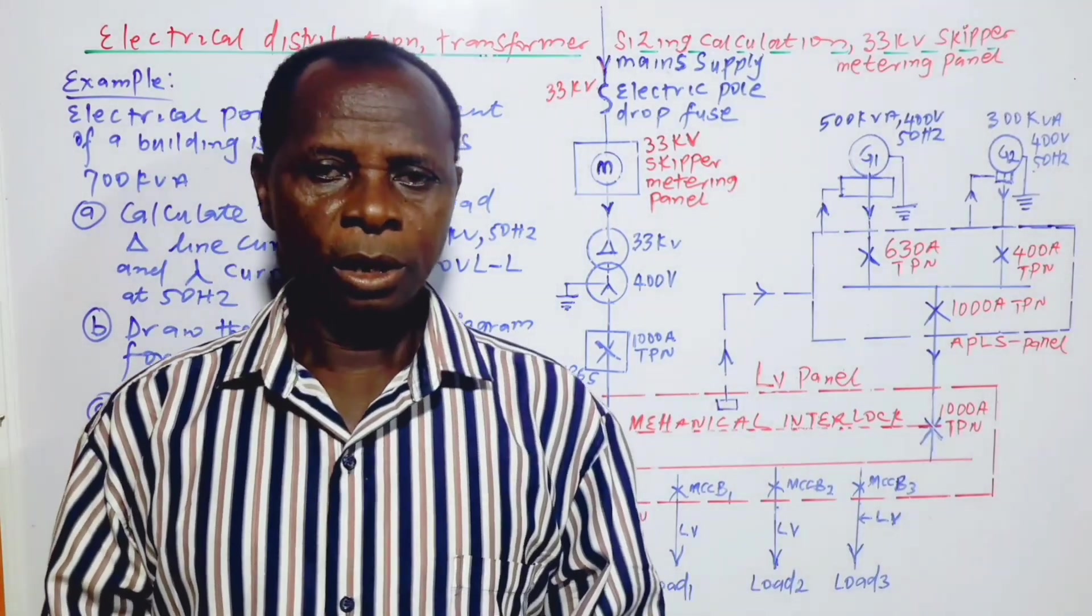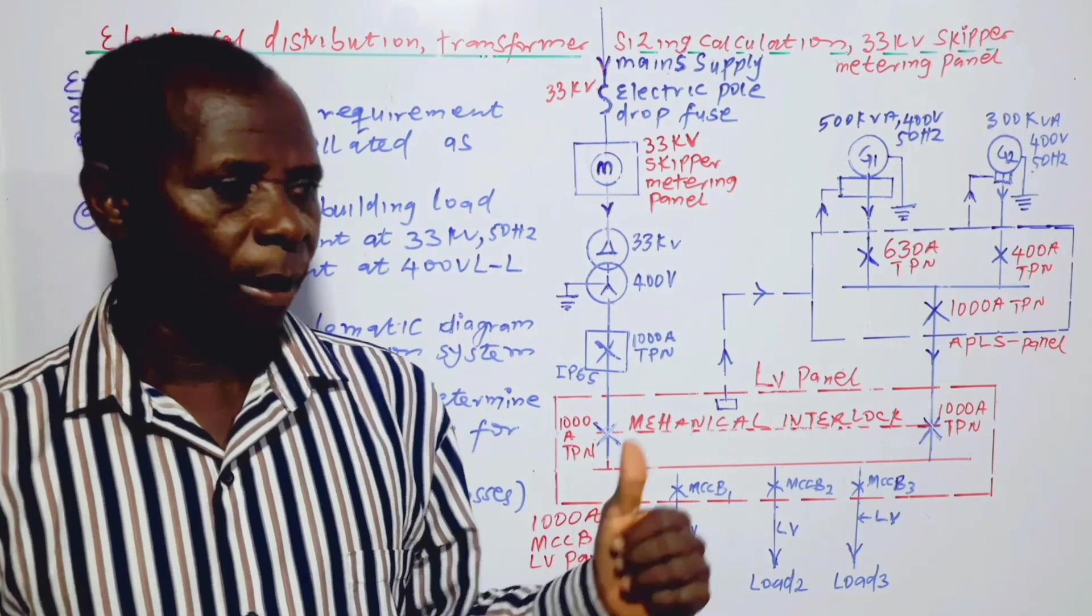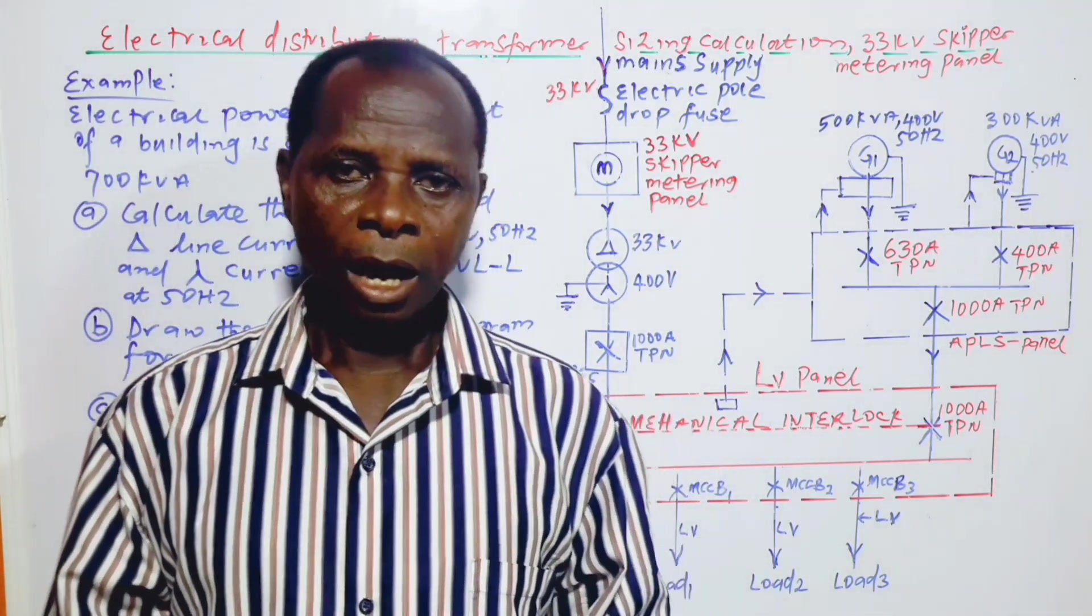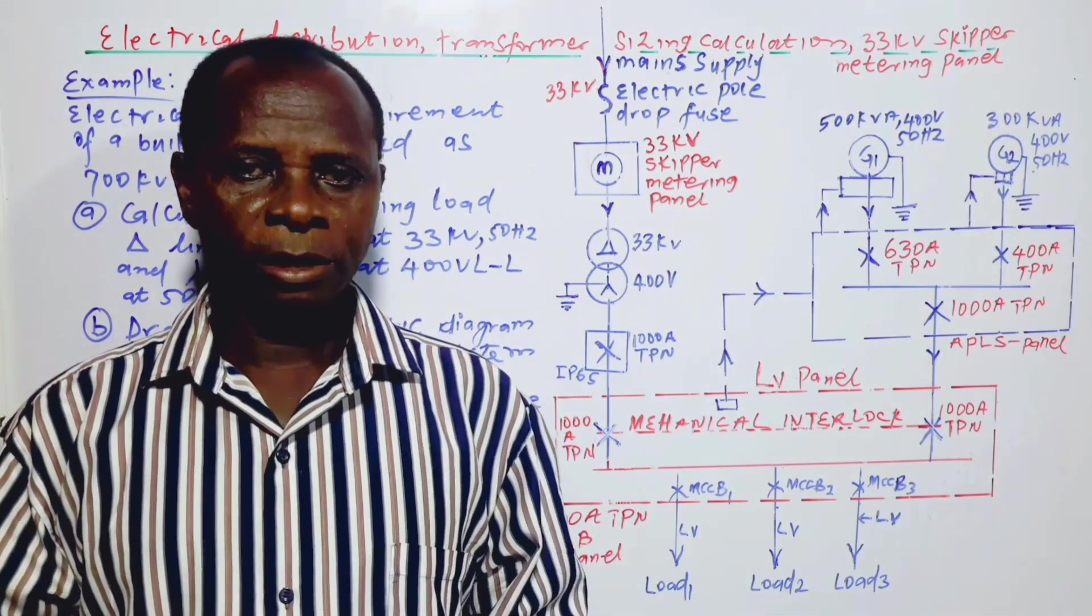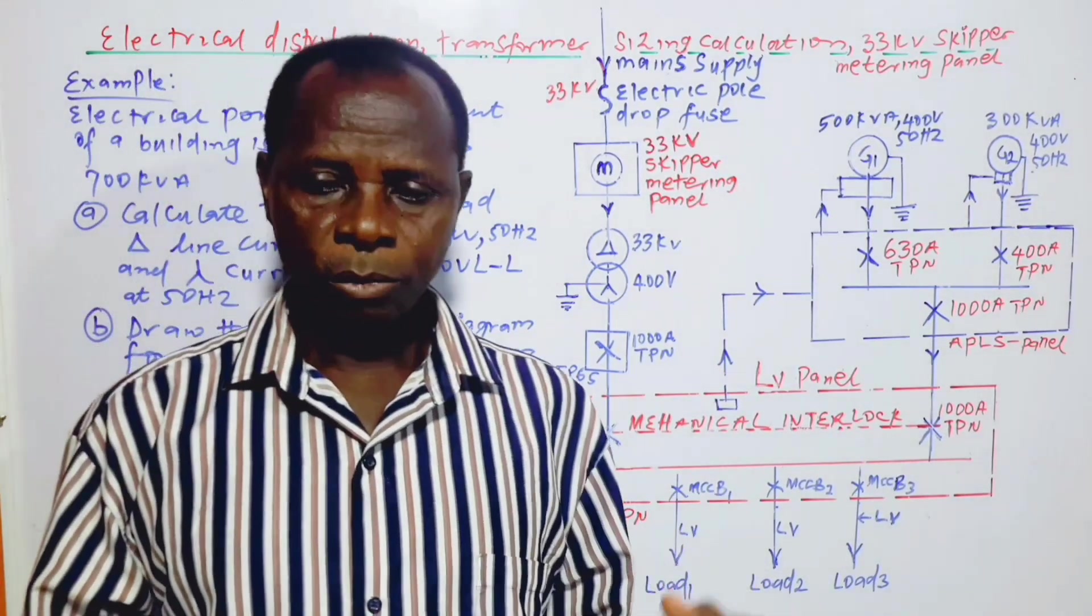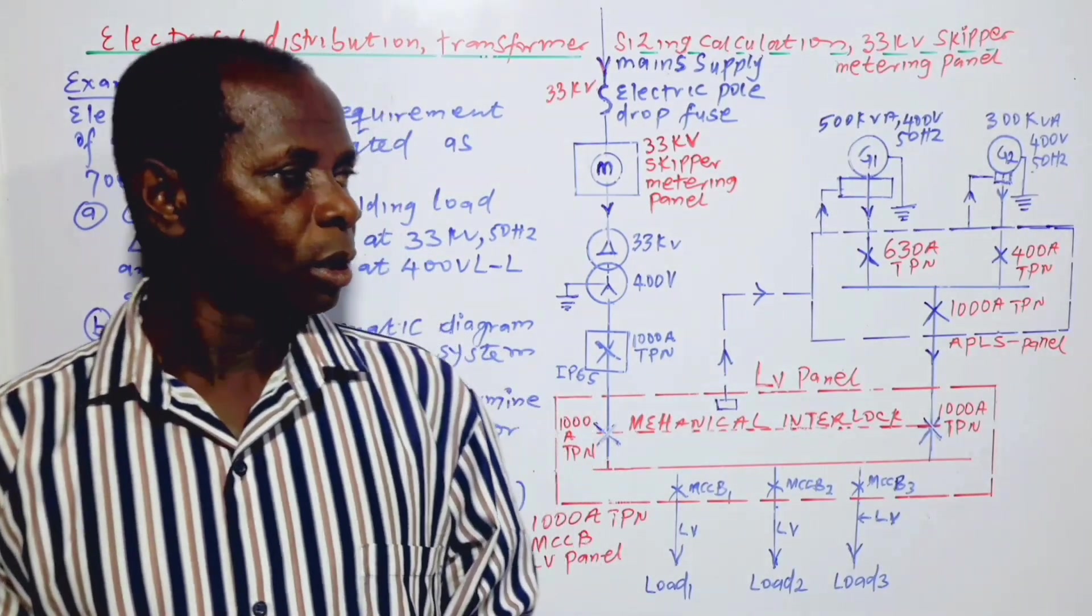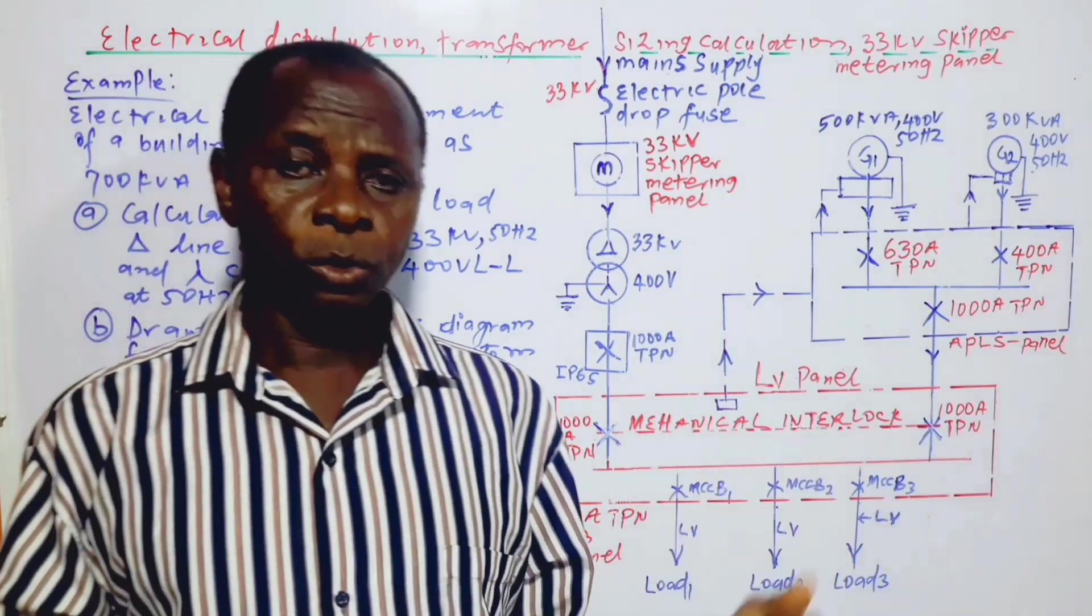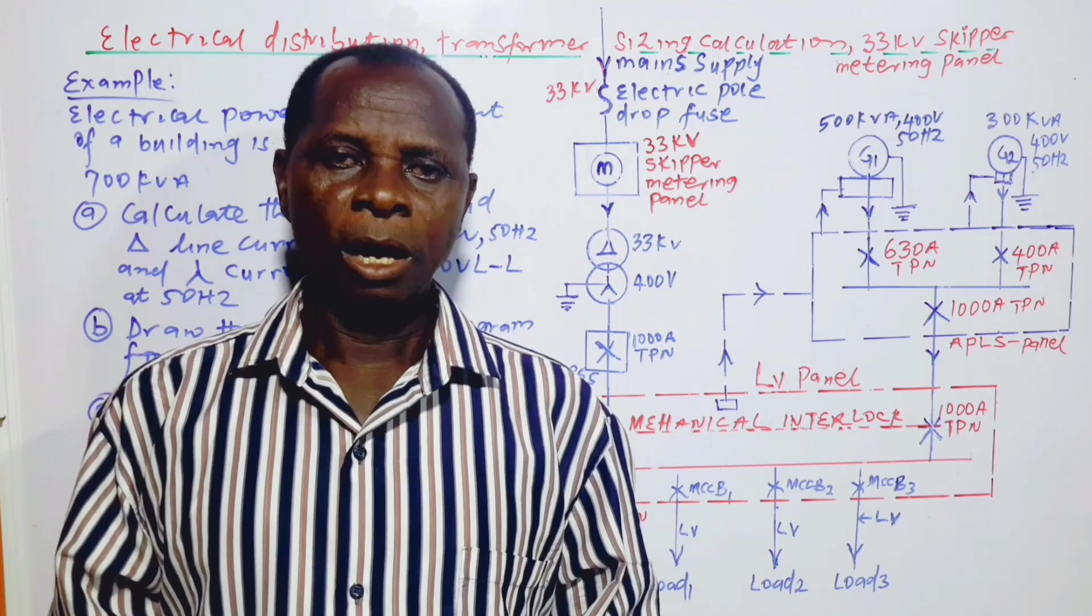In this video, we are going to see another type of distribution system, another type of power schematic diagram, as well as another calculation on transformer sizing. We are also going to see how to do metering at medium voltage, which is 33kV, without necessarily making use of the conventional HT or MV panel.